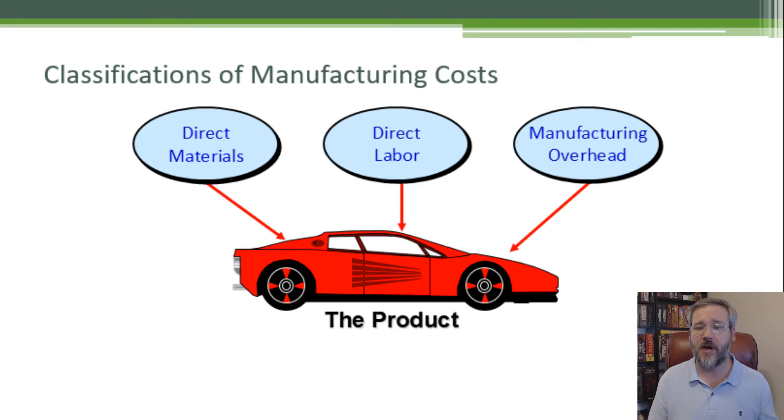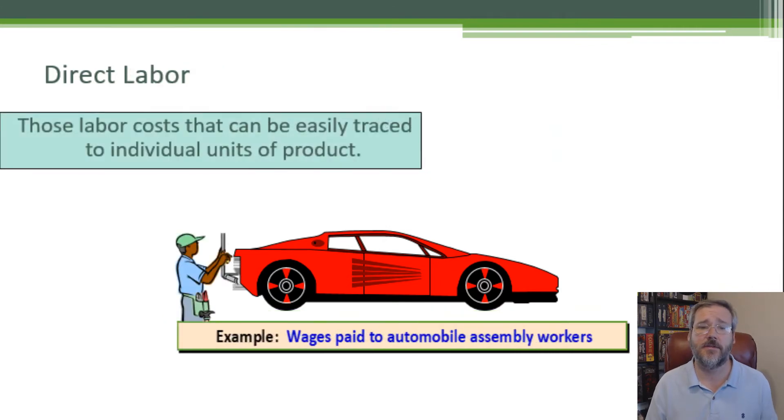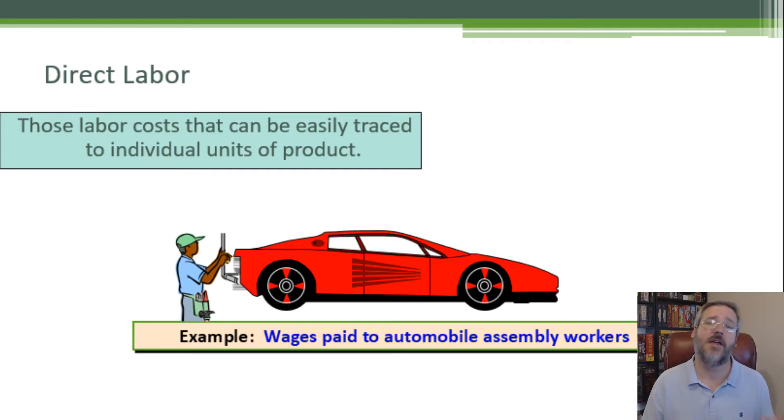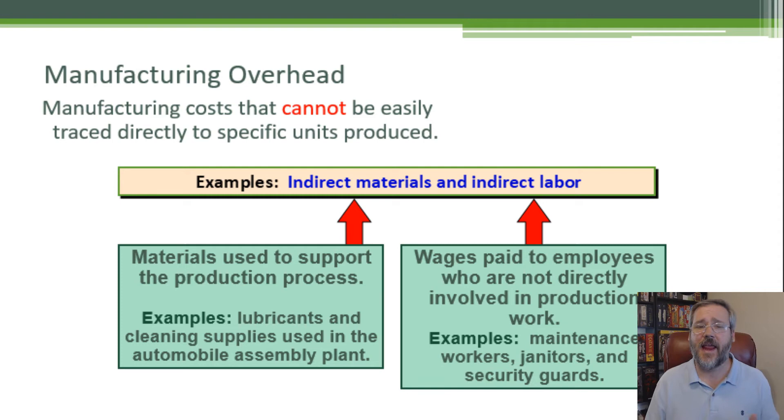All of my products are going to have manufacturing costs of direct materials, direct labor, and manufacturing overhead. Direct materials are the raw materials that become an integral part of the product and can be conveniently traced to the product, an example would be a radio installed in a car. Direct labor are the labor costs that can be directly traced to that individual product, for example the wages paid to the assembly workers. Manufacturing overhead, again, are costs that cannot be easily traced to a unit of product.